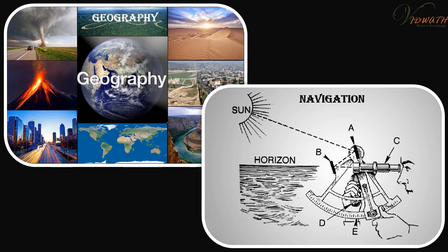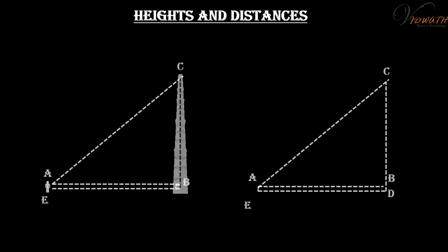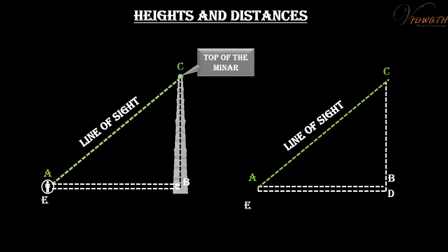Heights and distances. In this figure, the line drawn from the eye of the student to the top of the minar is called the line of sight. The student is looking at the top of the minar. The angle BAC, so formed by the line of sight with the horizontal, is called the angle of elevation of the top of the minar from the eye of the student.